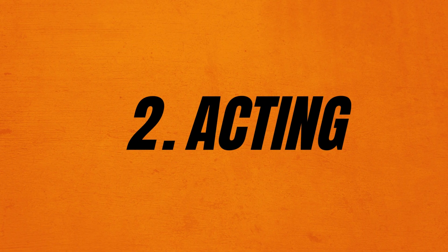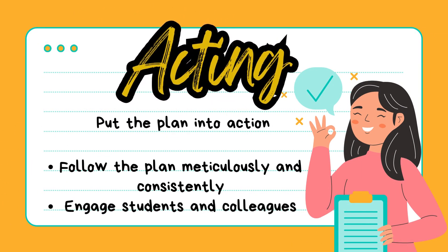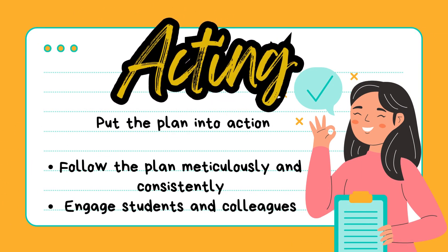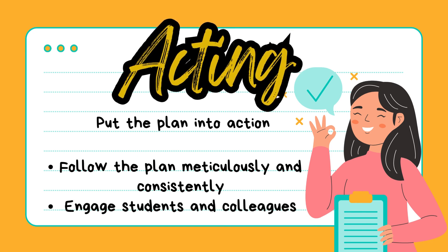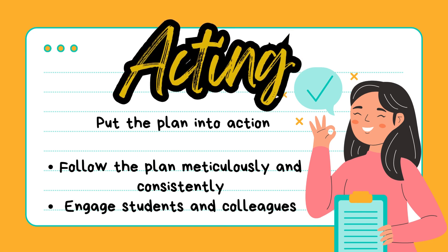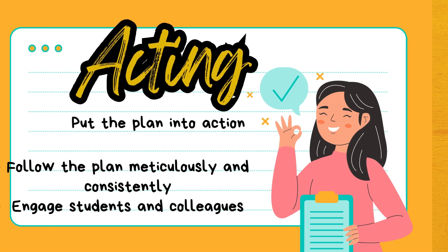Step 2: Acting — follow the plan meticulously and consistently. Carry out your plan in the classroom. This may involve introducing new teaching methods, changing classroom routines, incorporating technology, or other instructional strategies. Make sure to follow the plan consistently to ensure the reliability of your observations. Engage students and colleagues — ensure that students understand the changes being made and their purpose, and collaborate with other teachers or staff who might support the intervention.